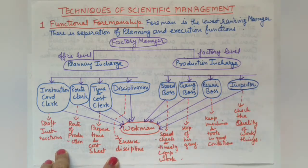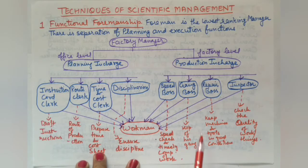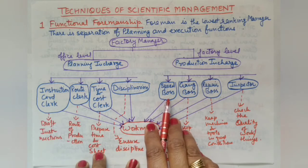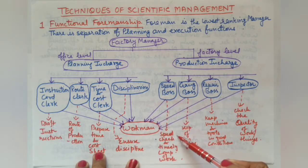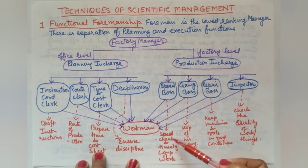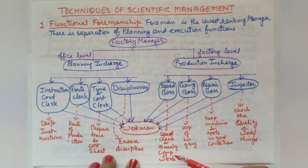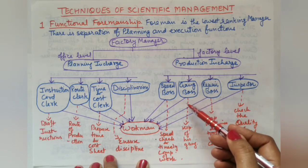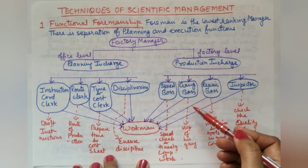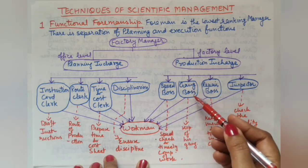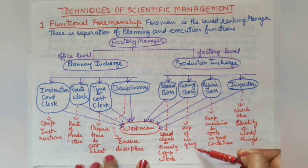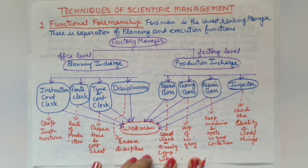At the production level, where workers operate on the factory floor, there are four bosses under the production in-charge. The first is the Speed Boss, who checks for timely completion of work and monitors each worker's speed. The second is the Gang Boss — 'gang' meaning a group — who supervises his gang's work and ensures workers are working in the right direction.